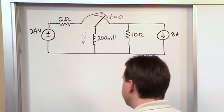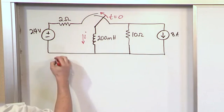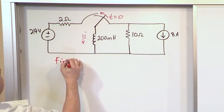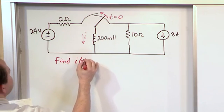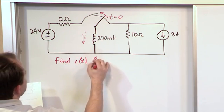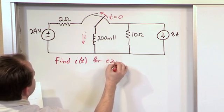And the question that we want to find is the current flowing through the inductor as a function of time for T greater than or equal to zero.